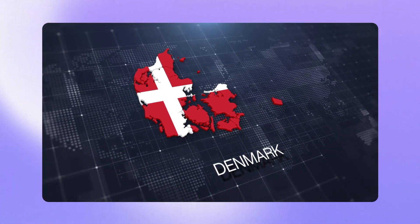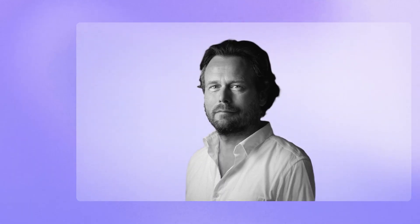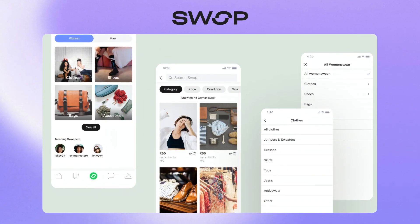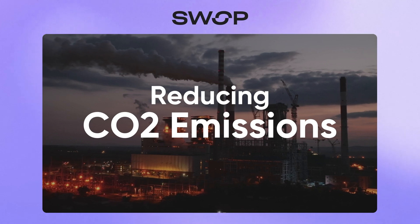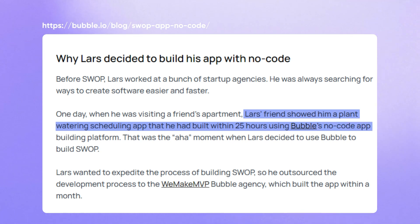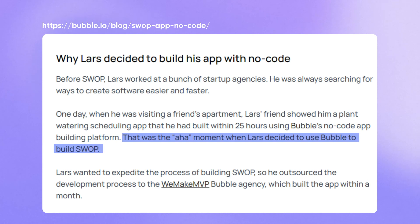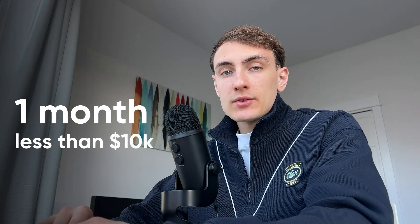The next case study is about how a Danish startup decided to use Bubble to create a sustainable marketplace with our WeMake MVP team. Co-founder Lars Richter decided to create Swap after his children asked him to help them trade their old clothes with their classmates. Recognizing the opportunity to turn this into a scalable solution, Lars envisioned Swap as a marketplace where students can exchange their clothes, promoting sustainability and reducing CO2 emissions. Lars discovered Bubble through a friend who had built a solution in Bubble in just 25 hours. Impressed by its efficiency, Lars partnered with our team at WeMake MVP, and we delivered the MVP of his marketplace in just one month for less than $10,000.